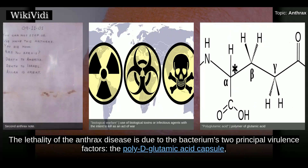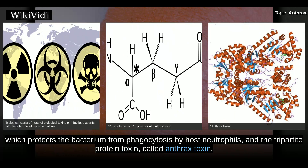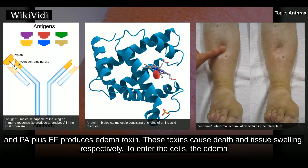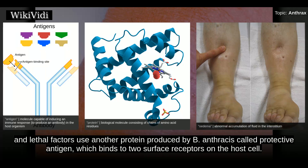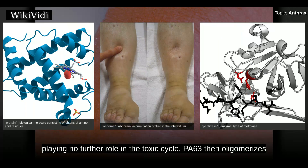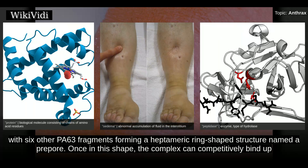The lethality of the anthrax disease is due to the bacterium's two principal virulence factors: the poly-D-glutamic acid capsule, which protects the bacterium from phagocytosis by host neutrophils, and the tripartite protein toxin called anthrax toxin. Anthrax toxin is a mixture of three protein components: protective antigen, edema factor, and lethal factor. PA plus LF produces lethal toxin, and PA plus EF produces edema toxin. These toxins cause death and tissue swelling, respectively. To enter the cells, the edema and lethal factors use protective antigen, which binds to two surface receptors on the host cell. A sorprotease then cleaves PA into two fragments, PA20 and PA63. PA20 dissociates into the extracellular medium, playing no further role in the toxic cycle. PA63 then oligomerizes with six other PA63 fragments forming a heptameric ring-shaped structure named a pre-pore.